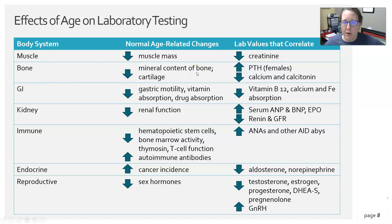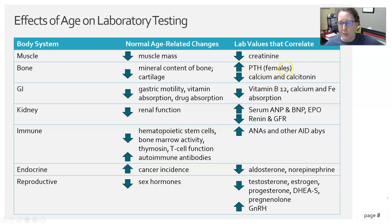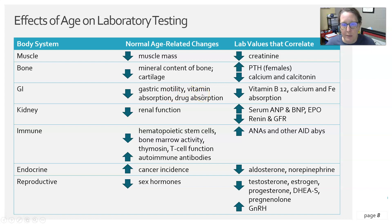In bone, there is decreased mineral content, increasing the risk of osteoporosis and fractures, along with decreased cartilage — causing many elderly to need knee or hip replacements. Lab values correlated with this include an increase in parathyroid hormone, especially in females, which can be linked to vitamin D deficiency, and a decrease in calcium and calcitonin. In the GI system, decreased gastric motility leads to decreased vitamin B12, decreased calcium, and decreased iron absorption and iron levels, which can translate to iron deficiency anemia in hematology.